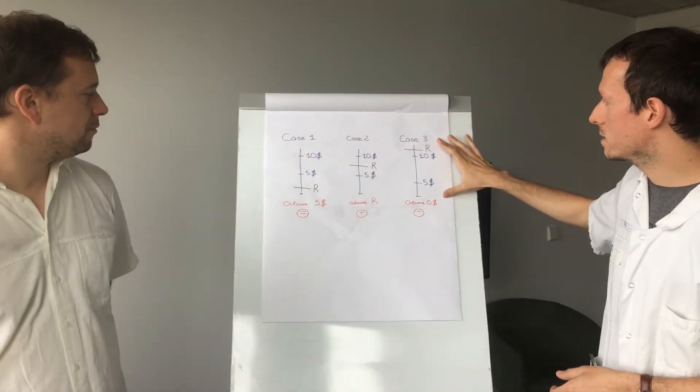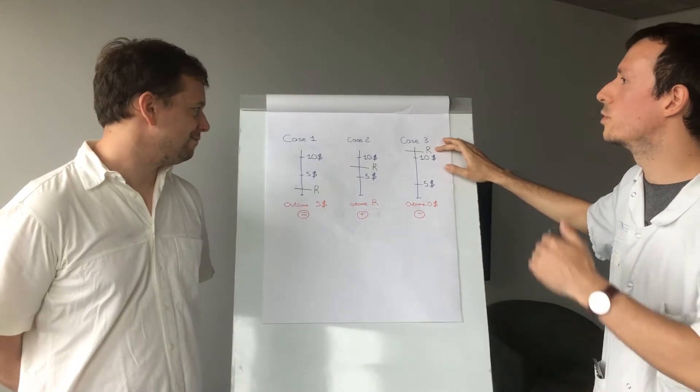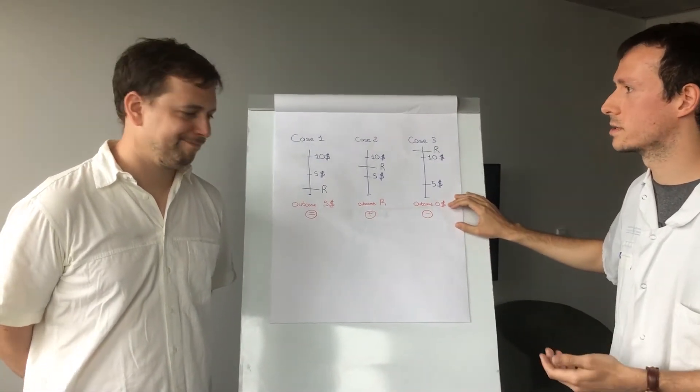In the second case here, the reserve price is between the two highest bids. And actually, thanks to the reserve price, you will have increased your revenue from $5 to the value of the reserve price. And with the third case, which is actually the worst case for you, the reserve price is too high and is above the first bid. And actually, the outcome of the auction will be $0. Yeah, that's bad.